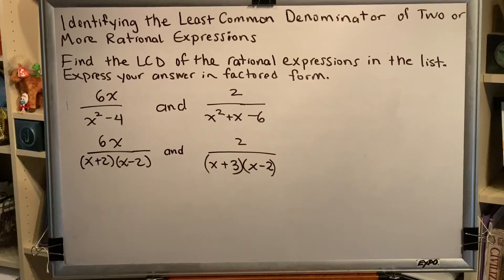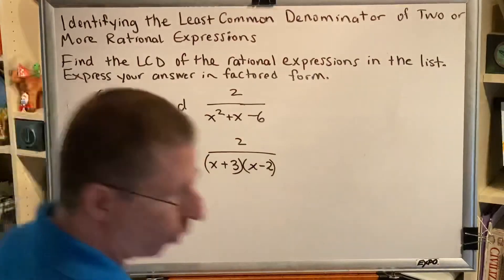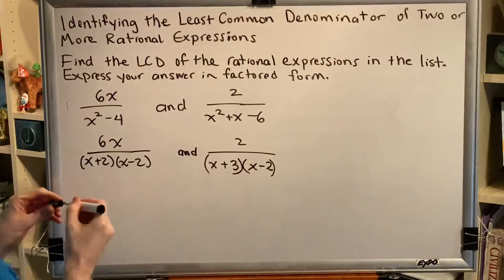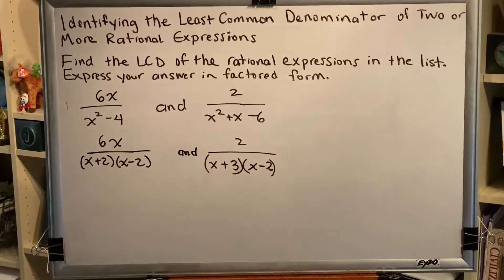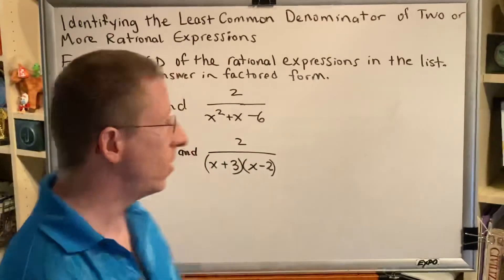Step 2. One fraction at a time, ask yourself the question: what polynomial factors do the other denominators have that this one is missing? So let's be very clear with our definitions here.